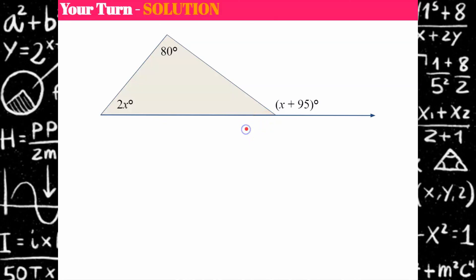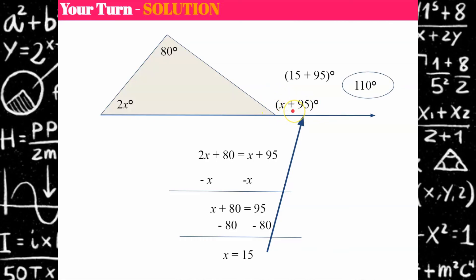Welcome back. Let's see how you did. So I know that 2x plus 80, the sum of these two angles, is going to be equal to x plus 95. Now if your equation is x plus 95 equals 2x plus 80, they're the same thing. So I'm going to collect variable terms first by doing the inverse and subtracting x from both sides. This will give me x plus 80 equals 95. And now I'm going to collect constant terms to the right by subtracting 80 from both sides, giving me an answer of x equals 15. But I'm not done yet because I asked you to find the exterior angle measure. So now I have to go back up to the angle, which is x plus 95. And I replace x with 15 and 15 plus 95 is 110. So the exterior angle here is 110.